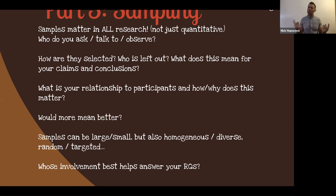Would more people mean better? Usually not. My own PhD, I did six, sample of six students, and I think that was the perfect number for what I wanted to do at the time. Samples could be big or small, but we also think about their heterogeneity. Are there lots of different kinds of people in this sample? Are they selected at random? Are they targeted, purposive, or, I think what most people do, is convenience samples? Whose involvement helps you best answer your research questions? That, I think, is the key.